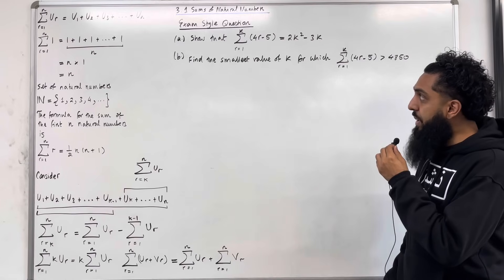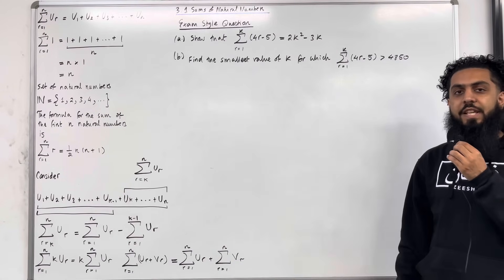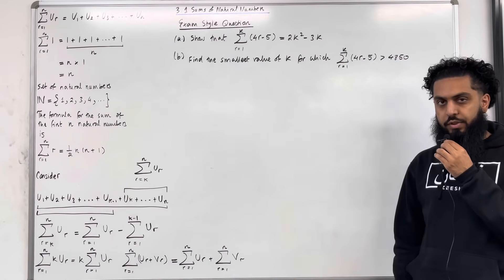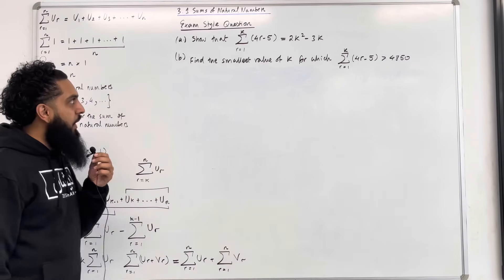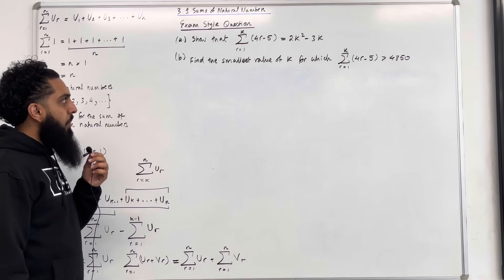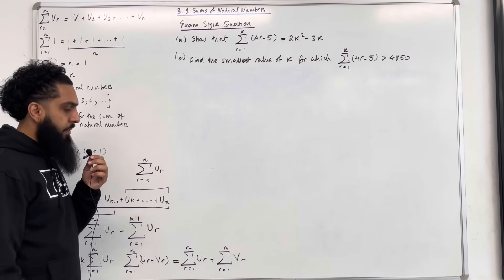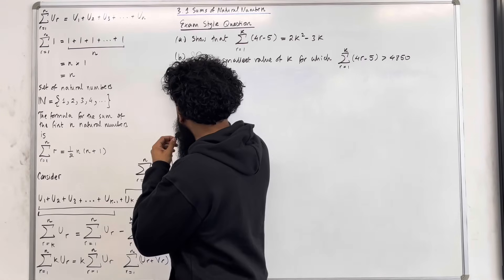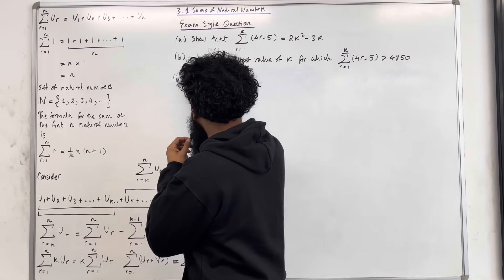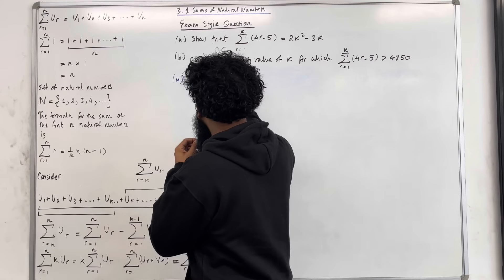These are the key facts of 3.1 Sums of Natural Numbers. I'll be implementing these key facts within two exam-style questions. Here is the first exam-style question. Part A: show that the sum from R equal 1 to K of 4R minus 5 is equal to 2K squared minus 3K.